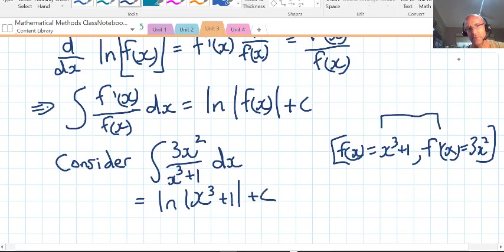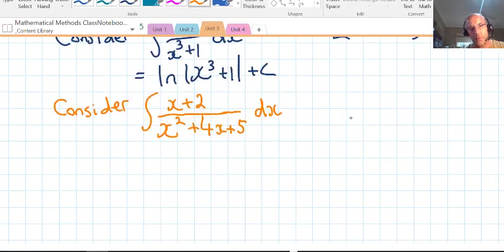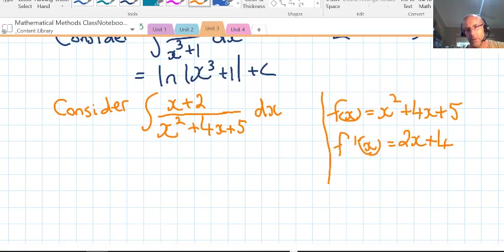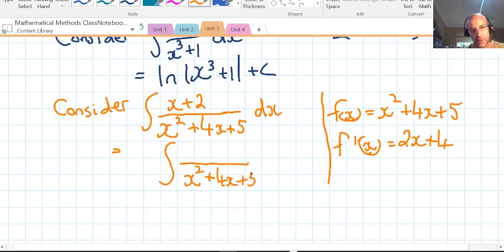Now what happens if we don't get this magic here? Let's have a look. For this one here we have perhaps an f of x set to x squared plus 4x plus 5. So the derivative would be f dash of x equals 2x plus 4. Now we look back at the function, we don't have 2x plus 4 on the top. So let's see what would happen if we wrote it in, if we wrote what we want. What would be the consequences of that?